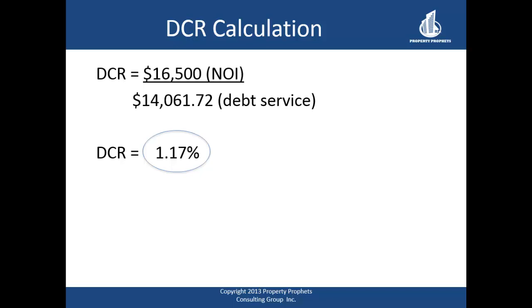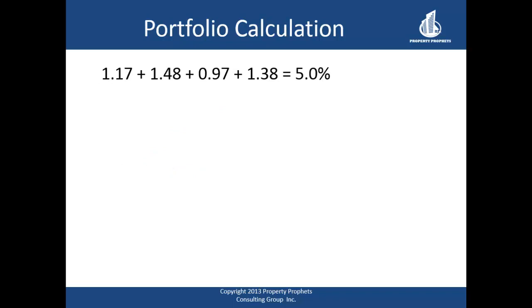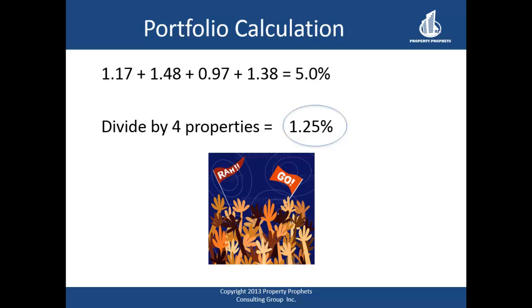What if we have other properties? Let's say you have three other properties. Using our subject property's DCR of 1.17, plus existing properties with individual DCRs of 1.48, 0.97, and 1.38, the total is 5.00, divided by 4 properties, giving an overall portfolio ratio of 1.25 — which should pass with all lenders.